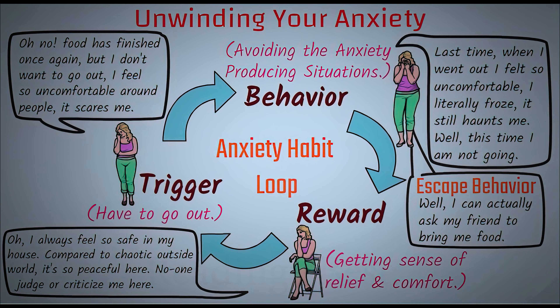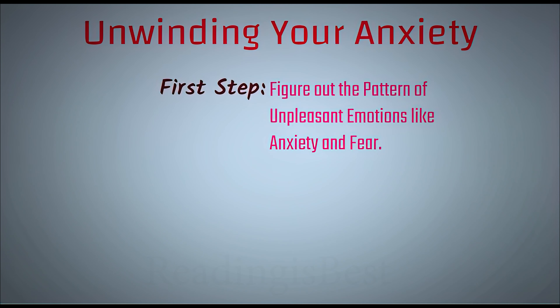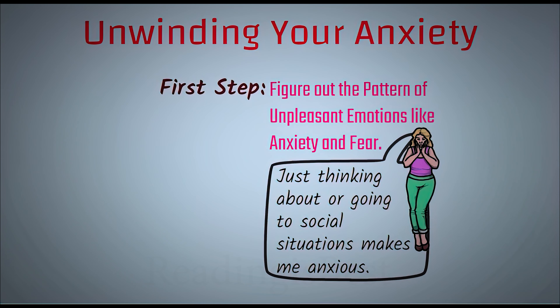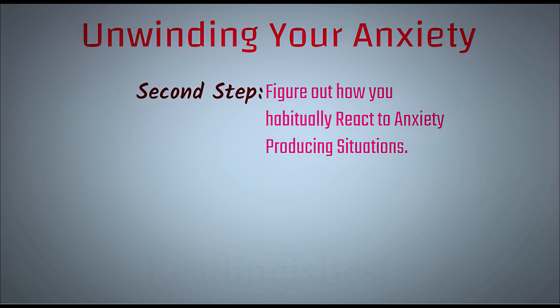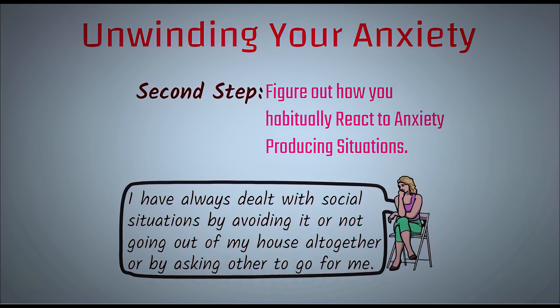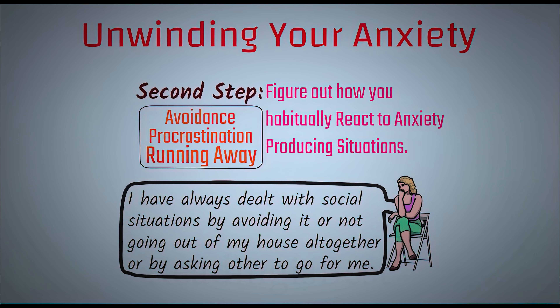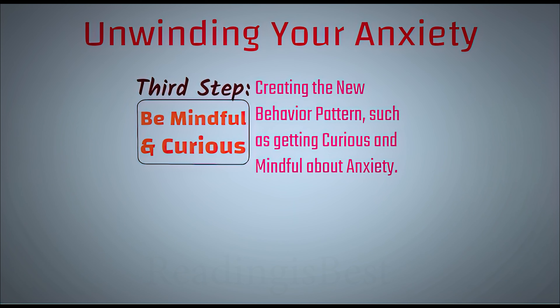The more you follow this pattern, the more this habit gets reinforced and your anxiety also worsens. Now let's talk about how to unwind your anxiety. Assuming you have social anxiety, the first step is to figure out the pattern of the anxiety habit loop. The second step is to figure out how you habitually react to stressful and anxiety-producing situations — such as whether you procrastinate, make excuses about why you can't go out, or ask others to go out for you.